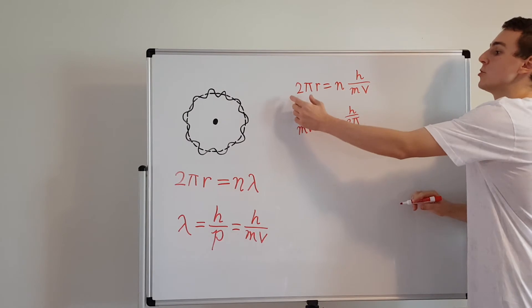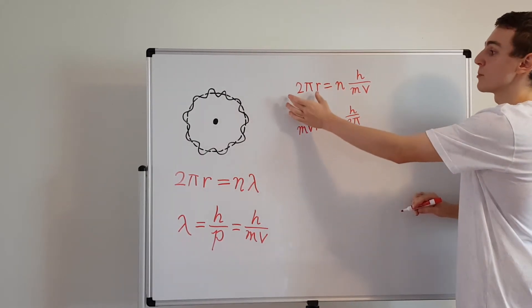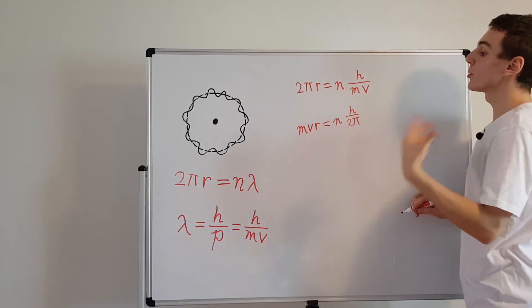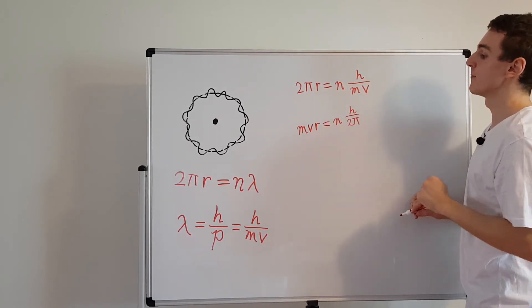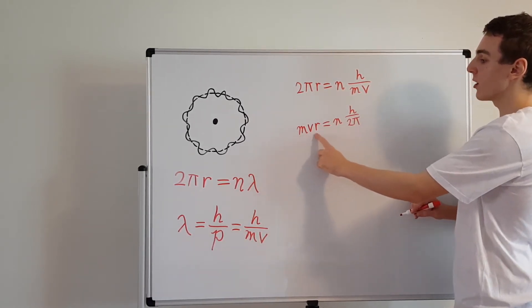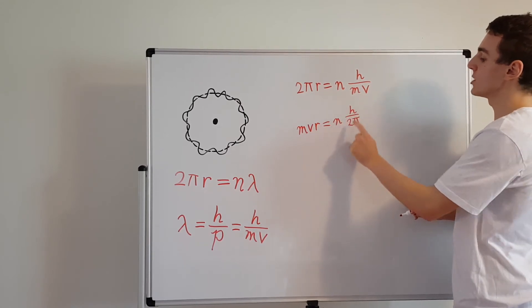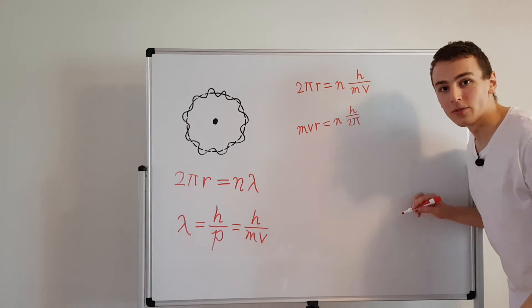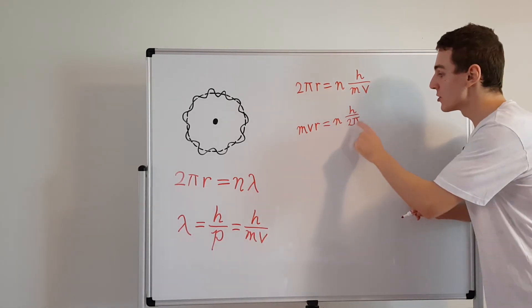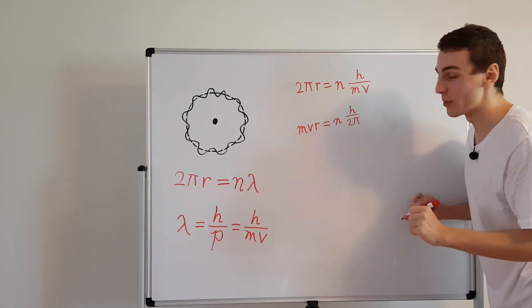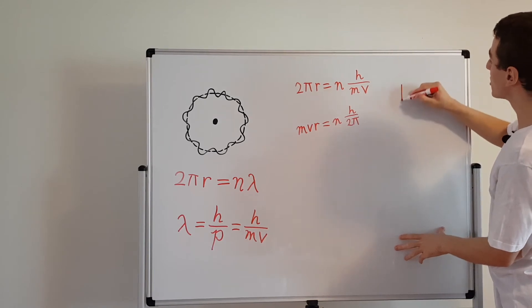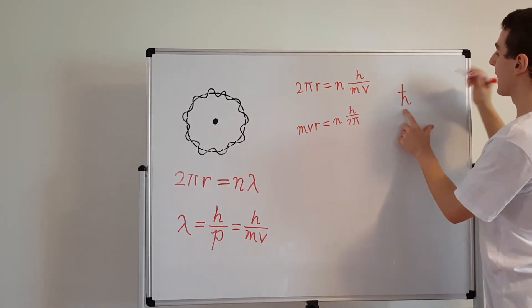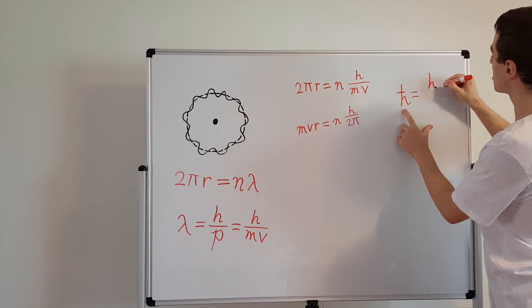So I've just moved the 2 pi, I've divided both sides of the equation by 2 pi, and I've moved this mv over to the other side by multiplying both sides of the equation by mv. So now we have mv r equals n times h over 2 pi. This over here appears very often in quantum mechanics. h over 2 pi is a very common combination. So it's actually given a shorthand symbol, which is h bar. h bar is equal to h over 2 pi.